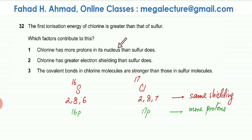So the first option, chlorine has more protons in its nucleus than sulfur does, is correct because that's one of the factors.